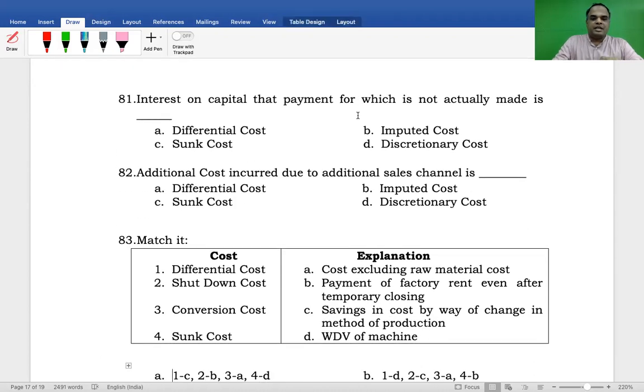Next: Interest on capital that payment for which is not actually made is? Differential, Imputed, Sunk, or Discretionary cost? The answer is Imputed Cost.